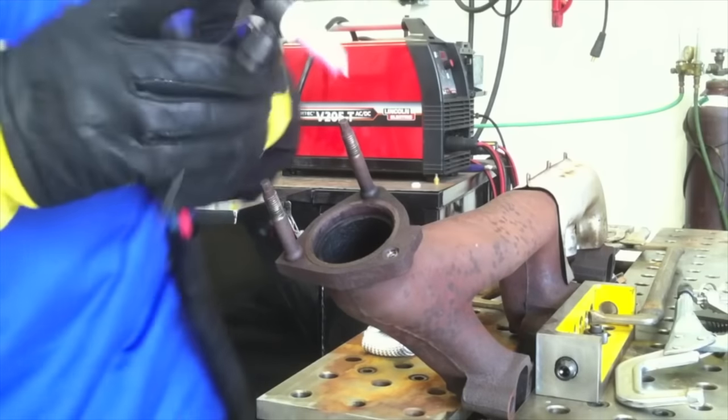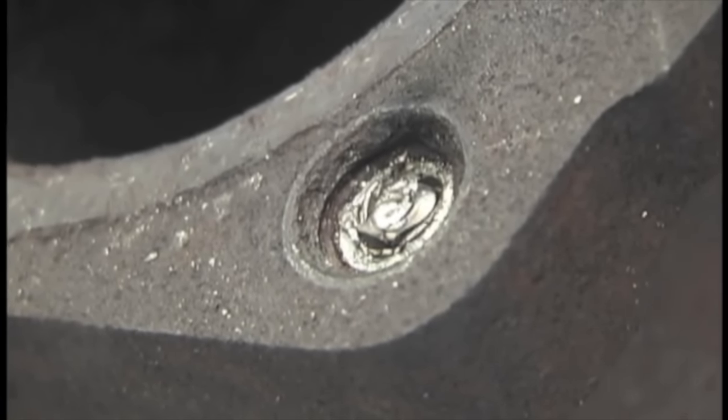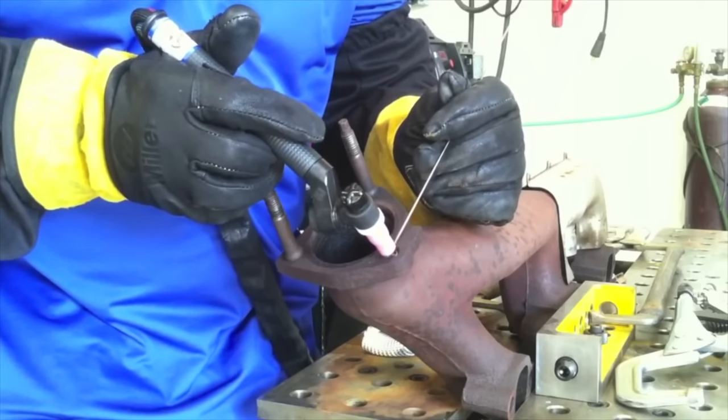You never know what kind of job is going to come in and sometimes you do a job just as a favor to keep a customer happy, like this one here. A broken stud in an exhaust manifold. Knowing how to get one of these out is helpful. In this case I'm just using some Hastelloy W but 309 or 312 wire would work pretty well.